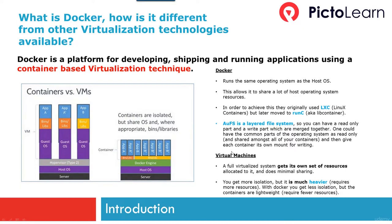Docker runs the same operating system as the host operating system, allowing us to share all the resources of the host OS. To achieve this, the Docker team originally used Linux Containers, also called LXC, but later moved to runC, also called libcontainers. Docker also features a layered file system called AUFS, with both read and write parts that can be merged. One could have common parts of the OS as read-only and give each container its own mount for writing.